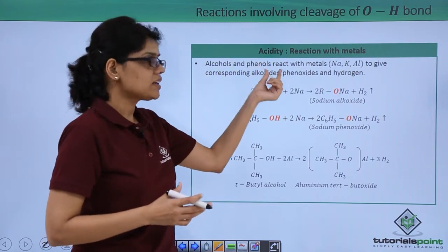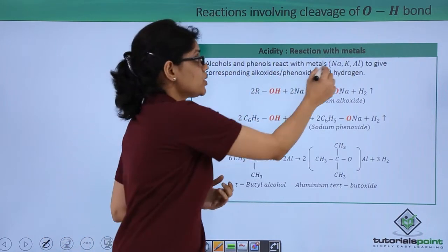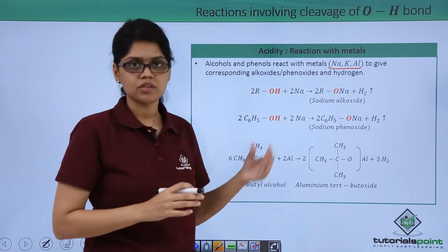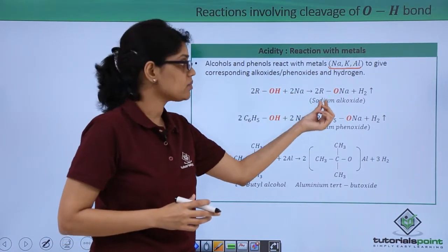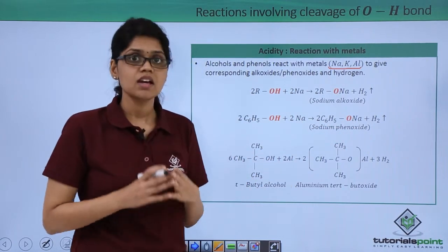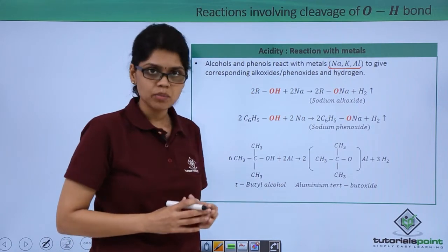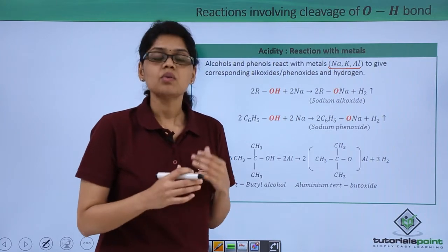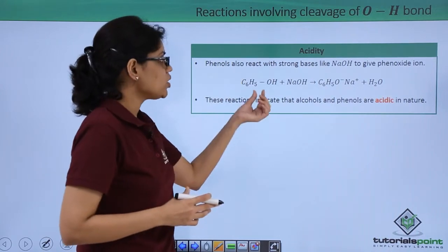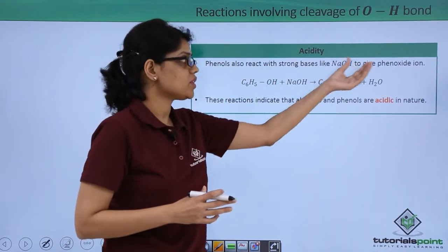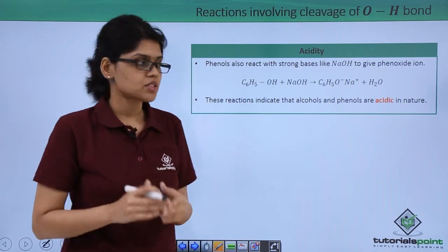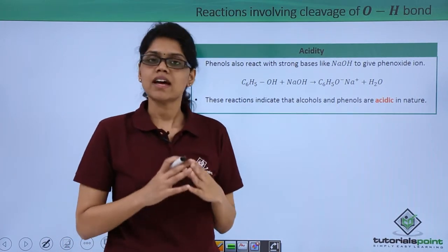For example, alcohols and phenols react with metals like sodium, potassium, and aluminium to give corresponding alkoxide and phenoxide along with hydrogen. Alcohol reacts with sodium to give sodium alkoxide; phenol reacts with sodium to give sodium phenoxide; and tert-butyl alcohol reacts with aluminium to give aluminium tert-butoxide. Reaction with bases also shows the acidic nature — phenol reacts with a strong base like NaOH to give phenoxide ion (C6H5O⁻Na⁺) and water. These reactions show that alcohols and phenols are acidic in nature.